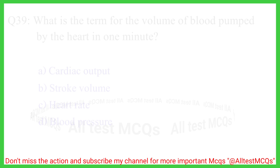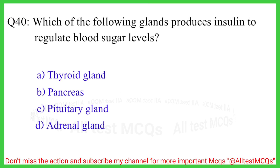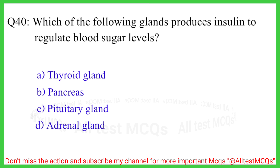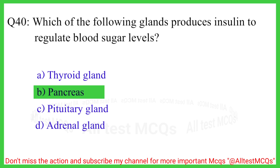Question number 40. Which of the following glands produces insulin to regulate blood sugar levels? The correct answer is option B, pancreas.